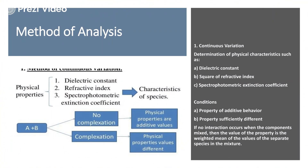Let us first understand the first method - the Continuous Variation Method. When a substrate reacts with the ligand and forms the complex, there would be deviation in the physico-chemical properties. We have different substrate properties and different ligand properties, but once the complex has been formed the complex has different physico-chemical properties. It may vary in dielectric constant values, refractive index values, or spectrophotometric extinction coefficients. When we do experimental analysis and find that the readings are different, we can determine that the complex is formed.